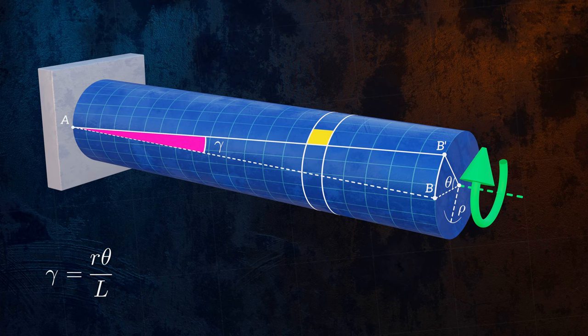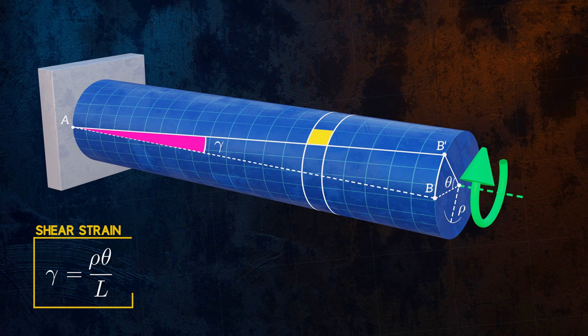So if we define rho as the radial distance from the center of the cross section, we can replace R in this equation with rho to give us an equation we can use to calculate shear strain due to torsion at any point within the bar. That's shear strains covered. But what about shear stresses?